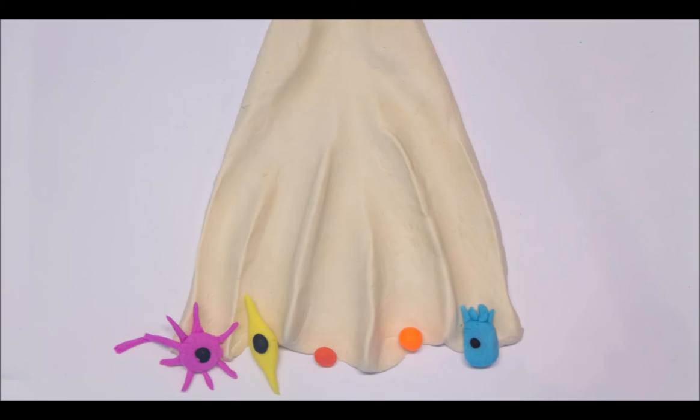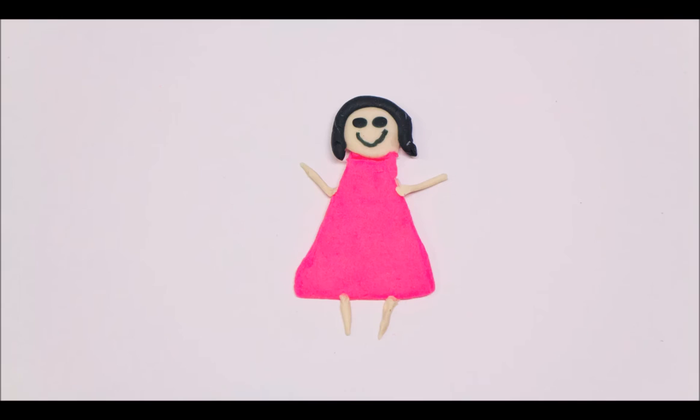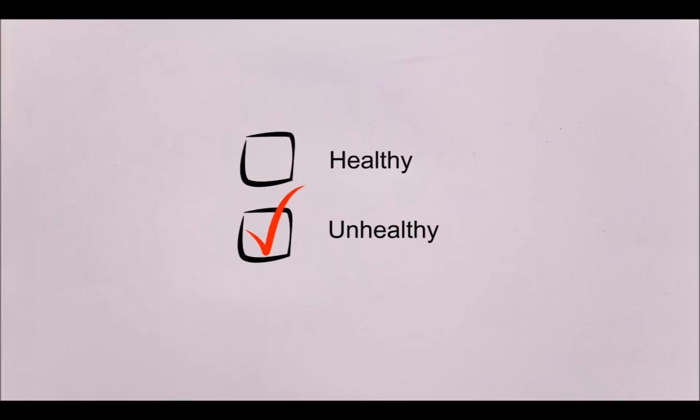Quickly after that, the yellow cell differentiates into a muscle cell and it doesn't take much time for the red cell to develop into a red blood cell. Last but not least, the orange cell finally becomes a fibroblast. All these cells together make us who we are, healthy human beings like Lisa.